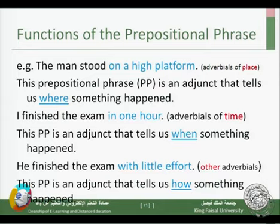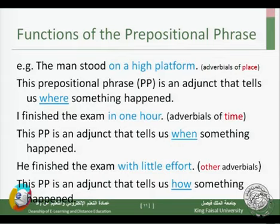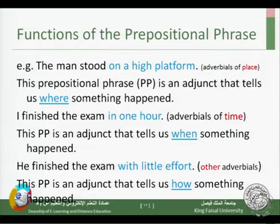For example: 'The man stood on a high platform.' 'The man stood' is already a complete sentence. When we add 'on a high platform,' we add additional meaning — where he stood. So 'on a high platform' is a prepositional phrase in form, an adjunct in function, and specifically an adverbial of place.